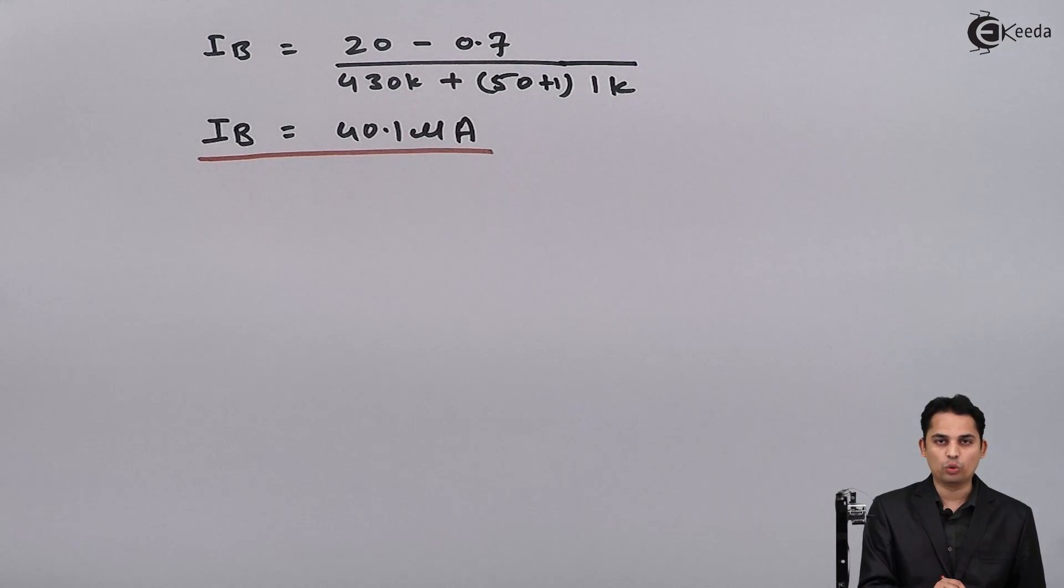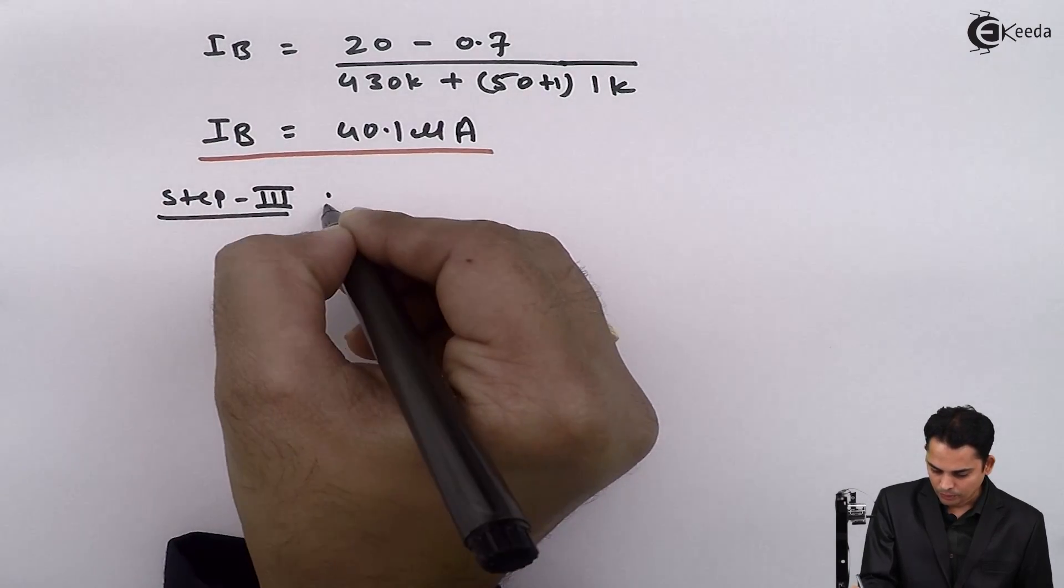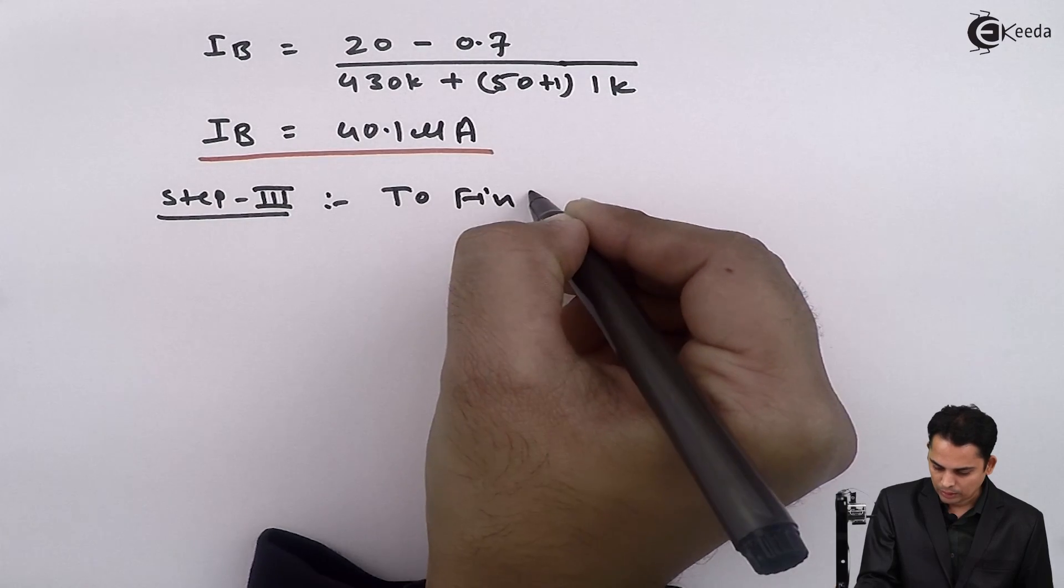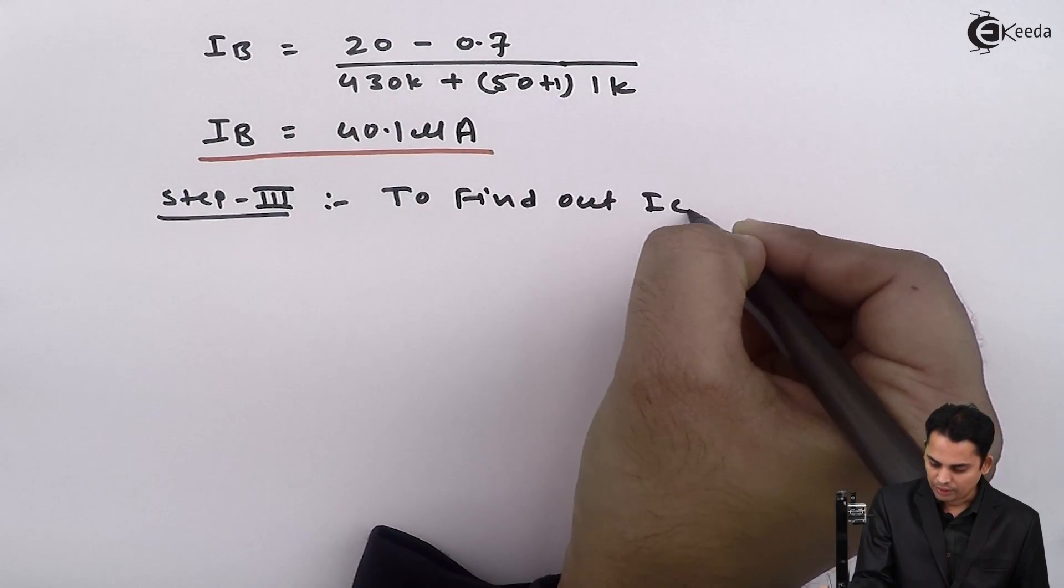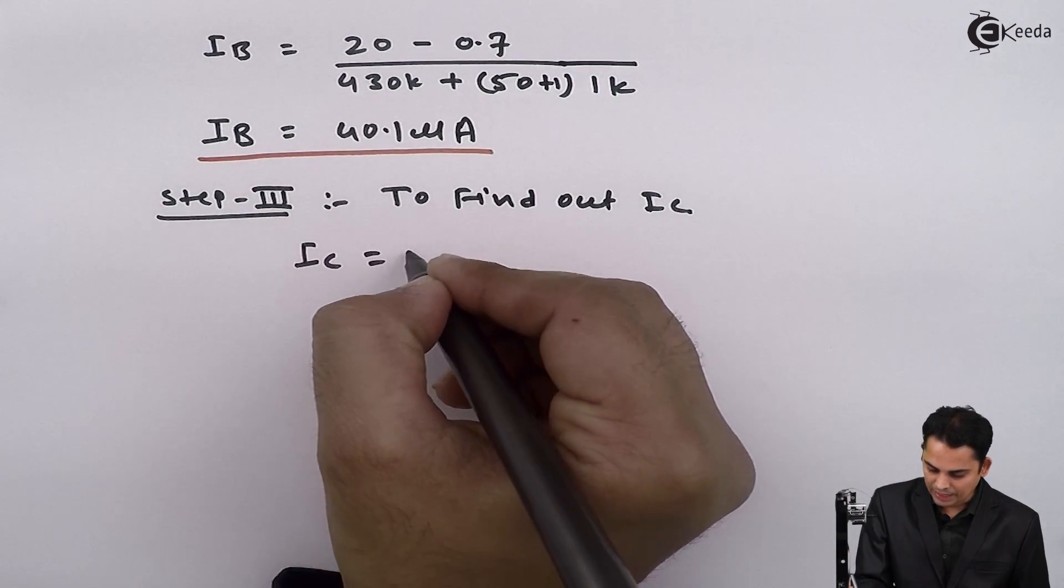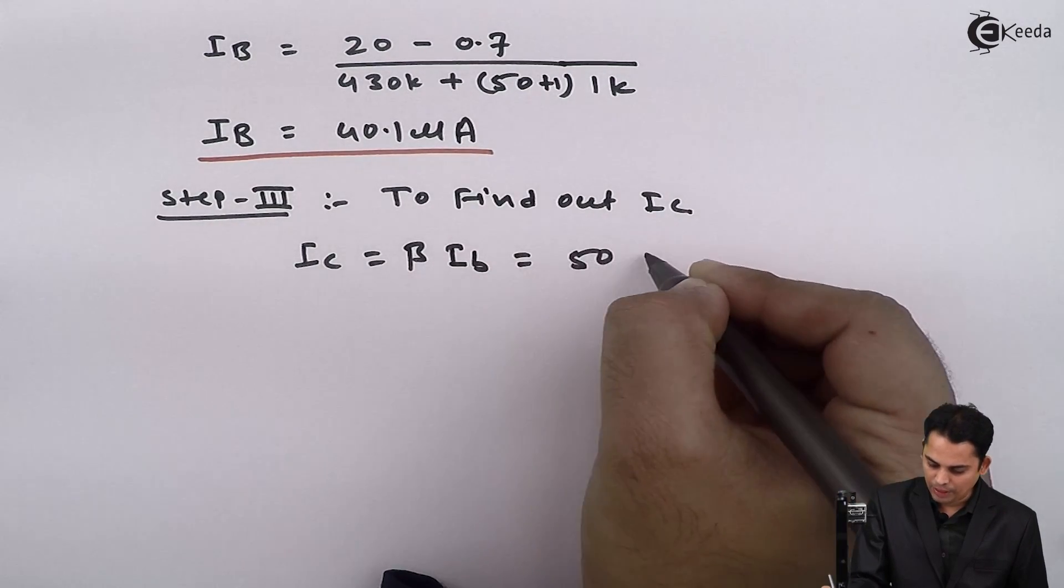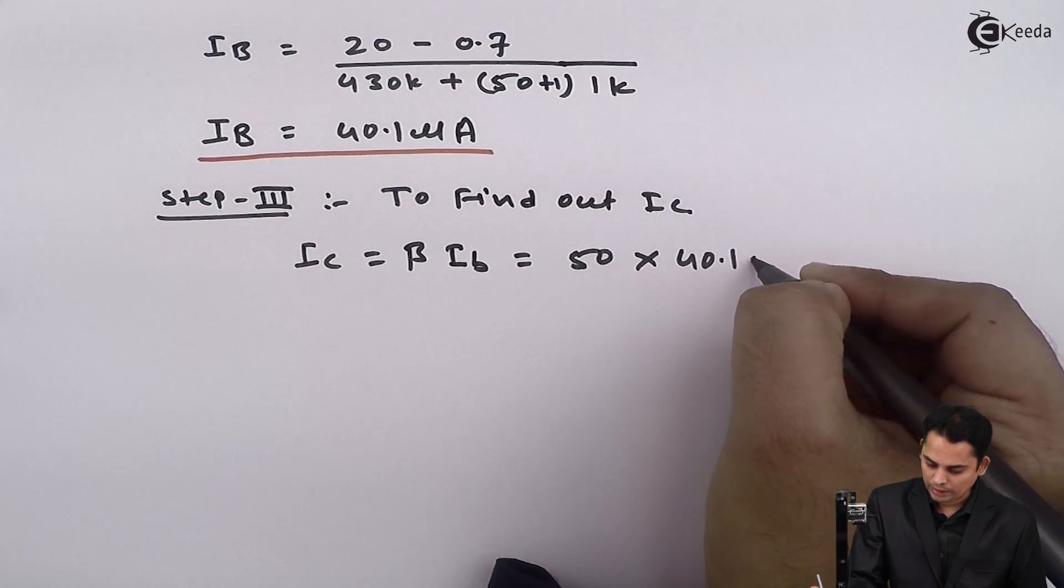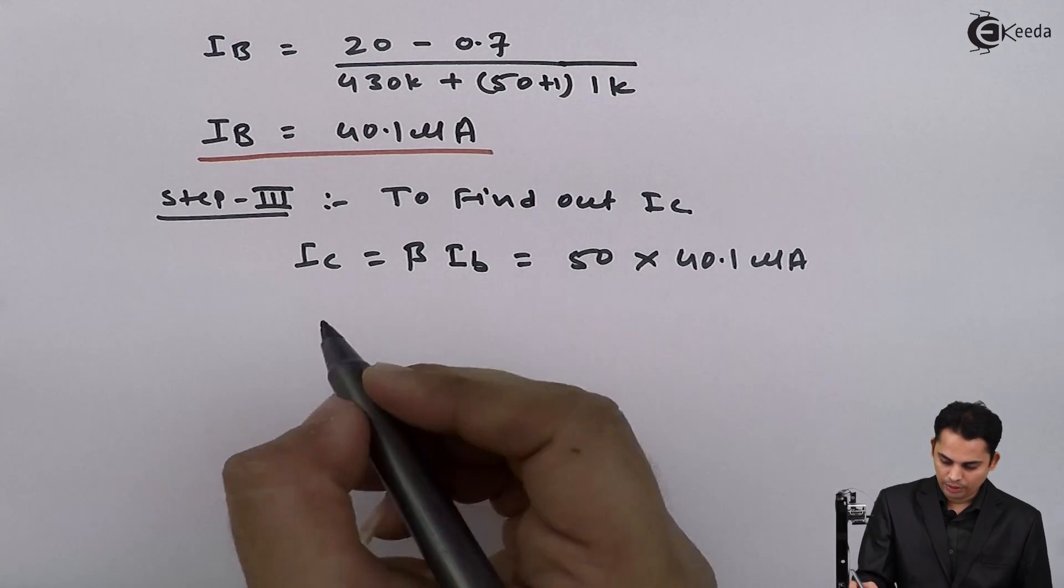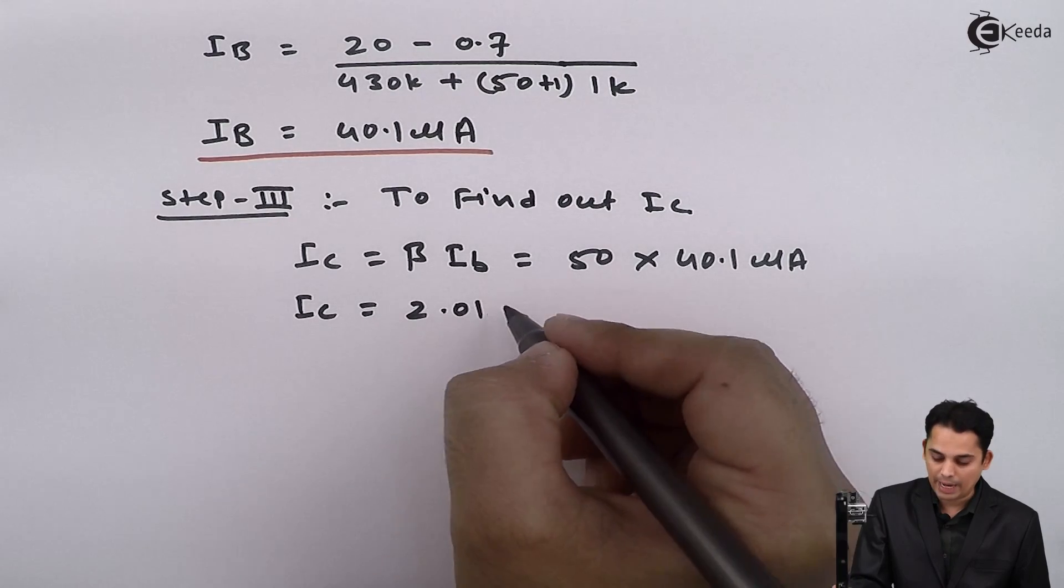We have got base current is equal to 40.1 micro amperes. Next step is to find out collector current IC. So step 3 to find out IC. We know IC is given as beta times IB hence it is 50 multiplied by 40.1 micro amperes. Hence value of IC is equal to 2.01 milli amperes.